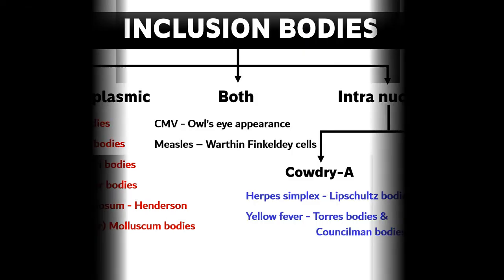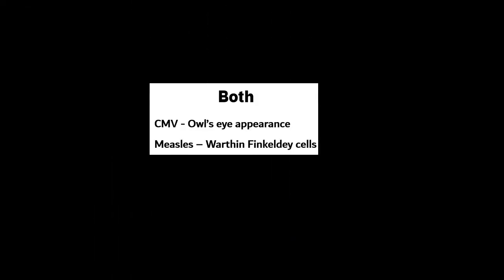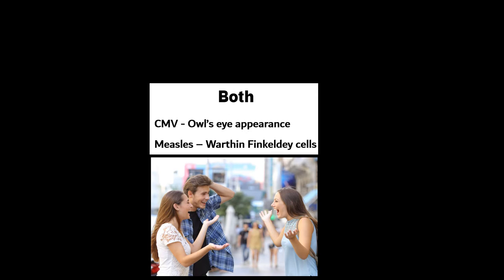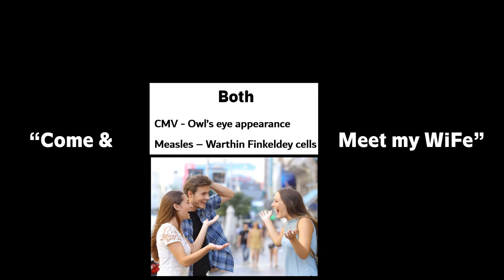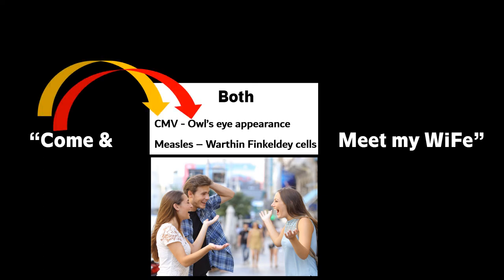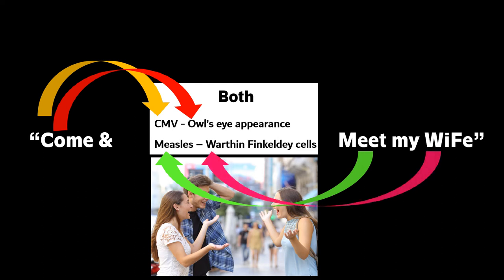To remember the intermediate group, imagine that Henderson invited Rani to meet his wife. He said, "Rani, please come and meet my wife." With this you can remember that in cytomegalovirus we have owl's eye appearance inclusion bodies — C stands for cytomegalovirus, O stands for owl's eye appearance. From the word meet you can remember measles, and from the spelling of wife, W stands for Warthin and F stands for Finkeldey. This way you remember the intermediate group — CMV and measles — with both intracytoplasmic and intranuclear inclusion bodies.